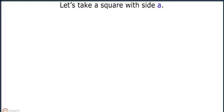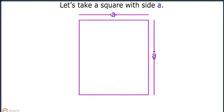Let's take a square with side A. We know that the area of a square equals side square, which implies area of a square equals A square.